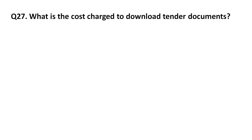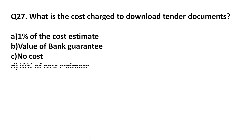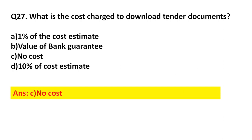Question 27: What is the cost charged to download tender documents? Option A: One percent of the estimated cost. Option B: Value of bank guarantee. Option C: No cost. Option D: Ten percent of the estimated cost. Answer: Option C, no cost.